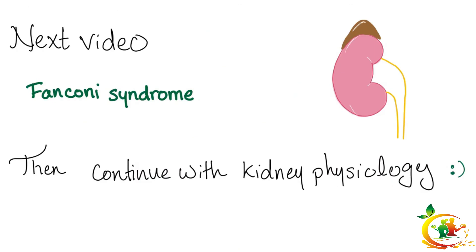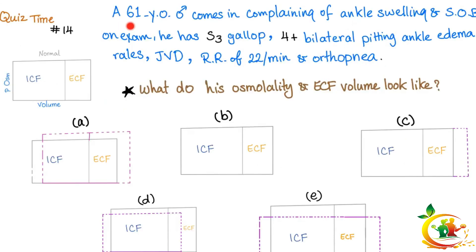Now you know everything you need to know about the proximal convoluted tubule. Please watch this video more than once. In the next video, I'll tell you what happens when your proximal convoluted tubule is impaired. Quiz time: a 61-year-old male presents with ankle swelling and shortness of breath.